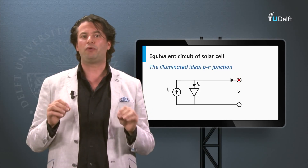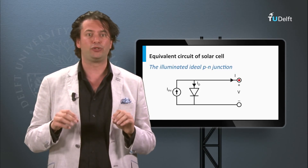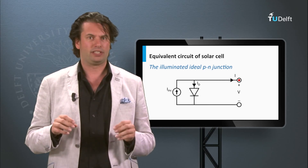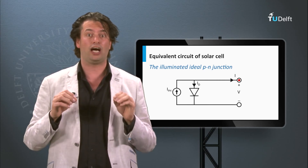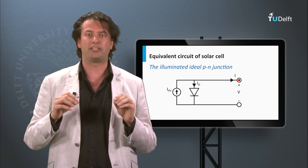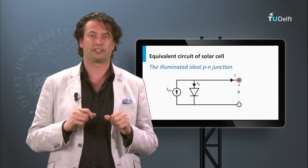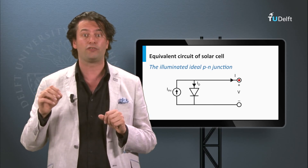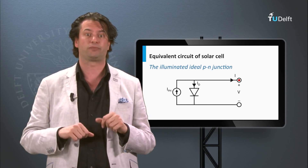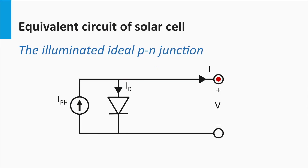Now we will illuminate the P-N junction using light. This means we are going to generate a large current dominated by the drift of minority charge carriers, which is opposite to the forward direction of the P-N diode. This is represented in the equivalent circuit by a current source connected in parallel with the diode.